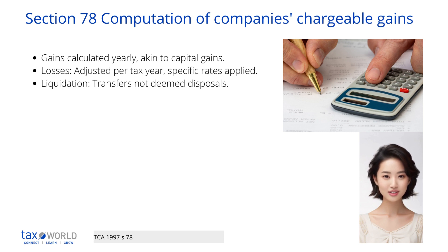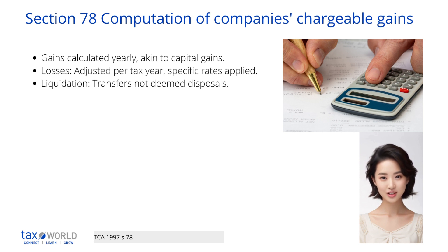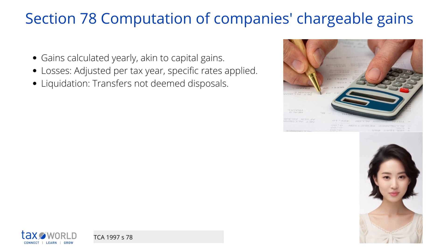However, provisions that apply only to individuals are not included. It's important to note that the application of capital gains tax and corporation tax is independent. The same transaction can have different tax implications for an individual and a company.